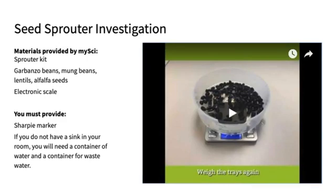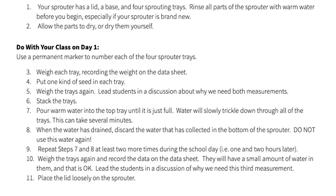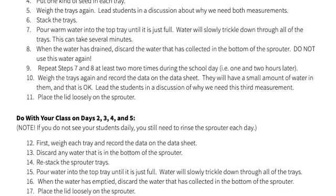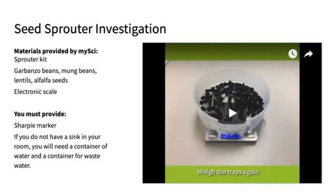You will need to read the sprouter setup and maintenance instructions on teacher page 4 ahead of time to prepare for this lesson. It is best to start your sprouter on a Monday. By Friday, all the seeds should be well sprouted and students can examine the sprouts closely. After six or seven days, the sprouts are likely to begin molding. If you have more than one section of science students, you should have materials to complete this experiment with each section concurrently. Check the consumables boxes you should have received to find materials for your additional sections. This is a great opportunity for your classes to compare their data to the other sections that you teach.